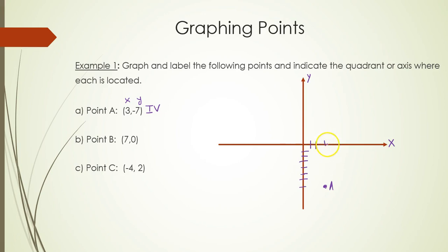Point B, (7, 0). So my horizontal movement is 7, positive 7. And there is no vertical movement, so I have 0.